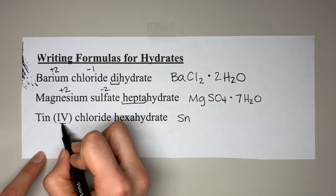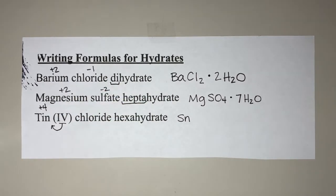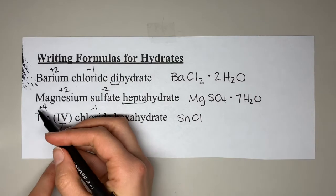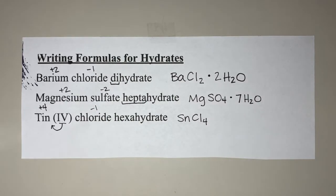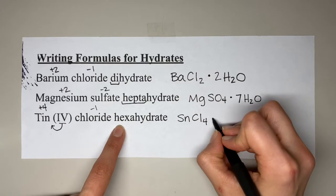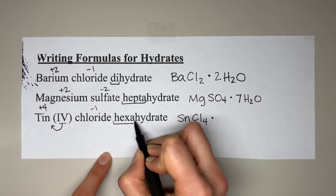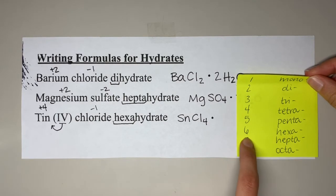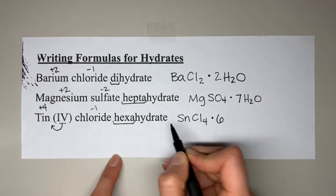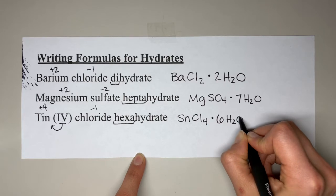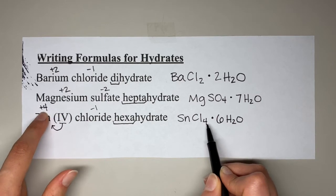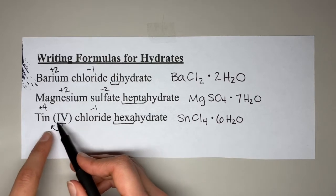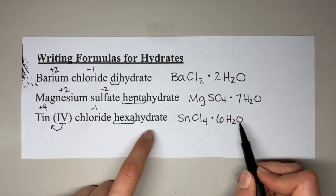For tin(IV) chloride hexahydrate: tin is Sn; the Roman numeral IV tells us tin has a +4 charge. Chloride is Cl with a -1 charge. Crisscrossing gives SnCl4. Then we add the hydrate with a dot: 'hexa' means six, and 'hydrate' means water molecules. The formula is SnCl4·6H2O.